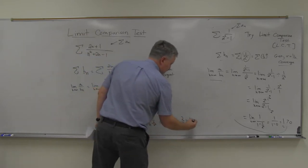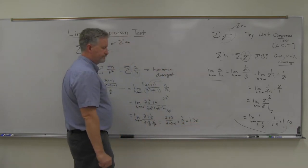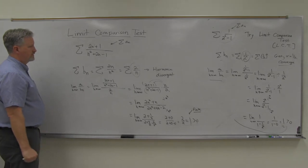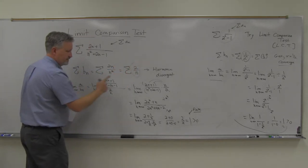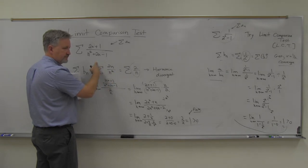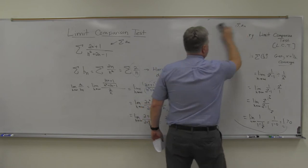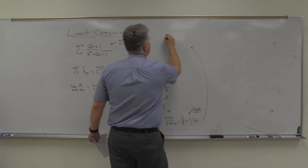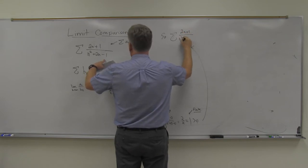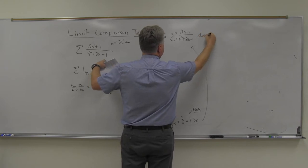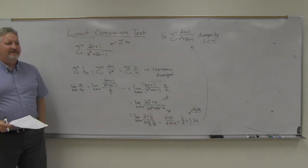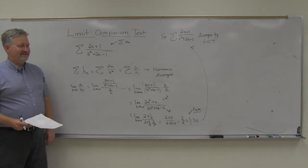The limit is 1, which is finite and greater than zero — so the test applies. Since b_n is divergent, a_n is divergent too. Conclusion: the series (2n + 1)/(n² + 2n - 1) is divergent by the Limit Comparison Test. It's a good idea to specify which test you're using.